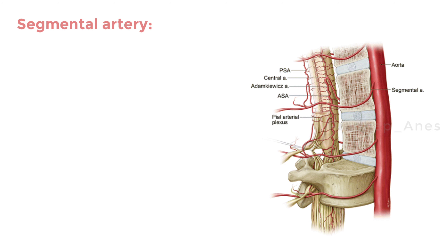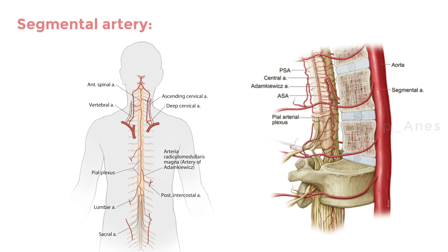Segmental arteries. In addition to the major arteries, segmental arteries also contribute to the blood supply of the spinal cord. These arteries originate from various levels of the aorta, the body's largest artery, and send branches to the spinal cord, providing additional sources of oxygenated blood. The segmental arteries enter the spinal canal through openings between the vertebrae, and their branches merge with the existing arterial network within the spinal cord.